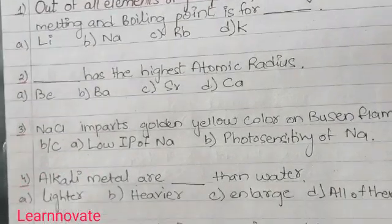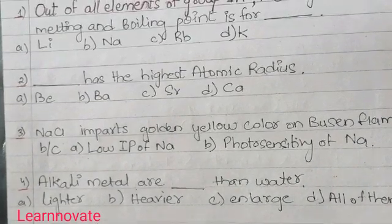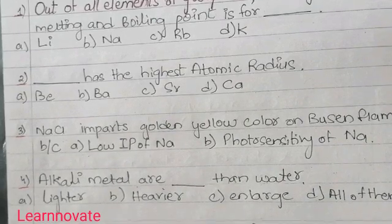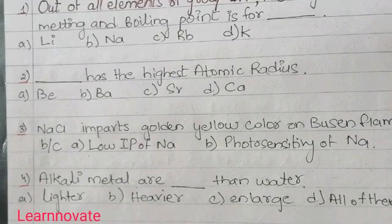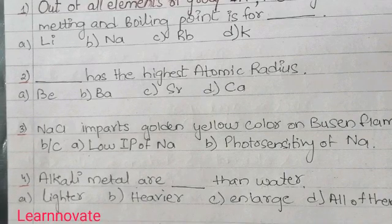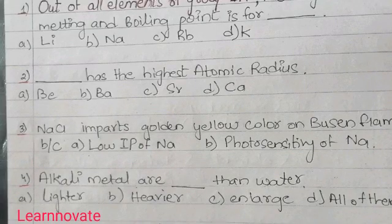The next question says: a graphite anode in a Down cell is used because — A: it does not react with sodium; B: it is easy to fuse. In this question you are looking at the Down cell process. We know Down cells are used for the preparation of NaCl through electrolysis, and graphite is used as the anode. They are asking why graphite is used as the anode and not any other metal or element.